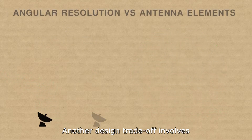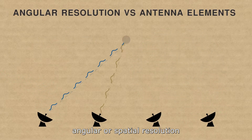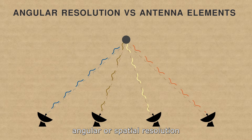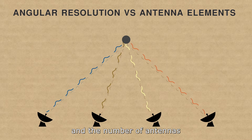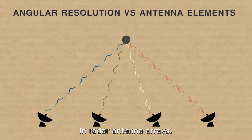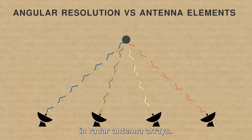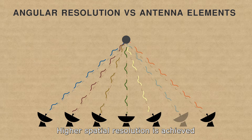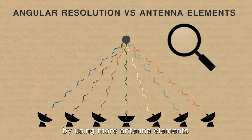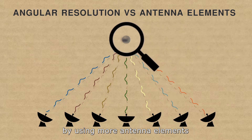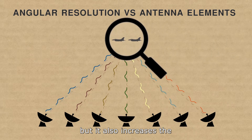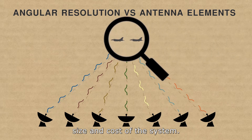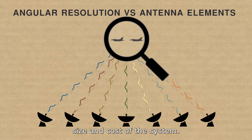Another design trade-off involves angular or spatial resolution and the number of antennas in radar antenna arrays. Higher spatial resolution is achieved by using more antenna elements, but it also increases the size and cost of the system.